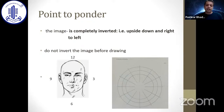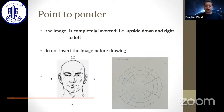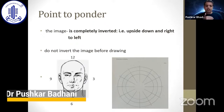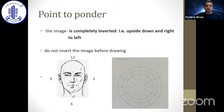What are the points to ponder? First, when we see with an indirect ophthalmoscope, the image is completely inverted — it is upside down, and right is left and left is right. So to draw the fundus diagram, we should not invert the image in our mind before drawing. What we can do is invert the Amsler-Dubis chart instead.